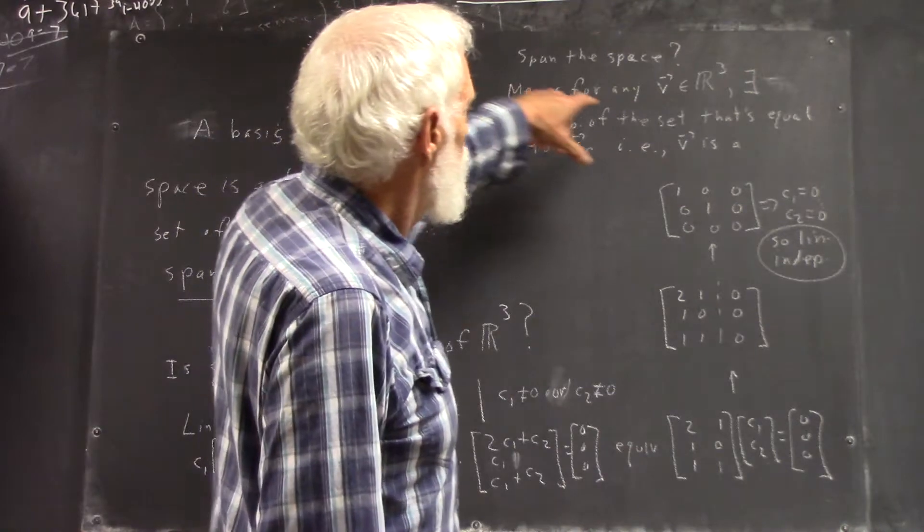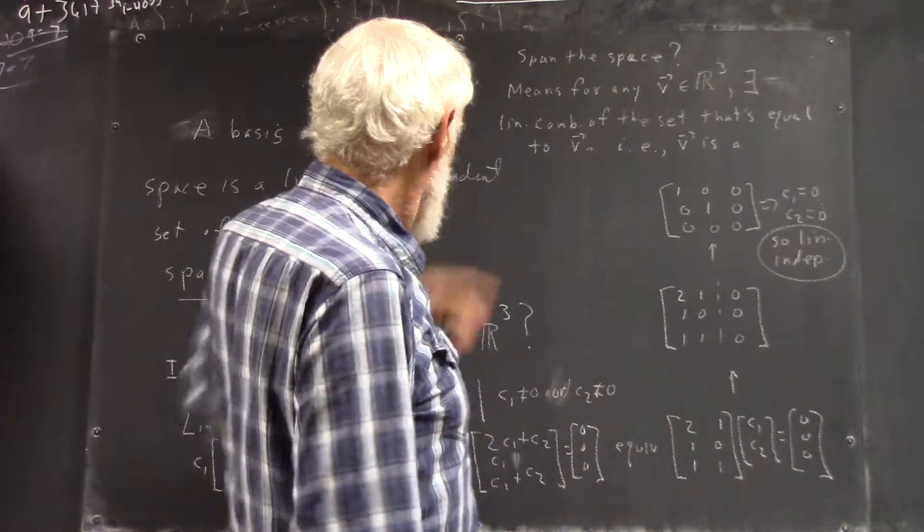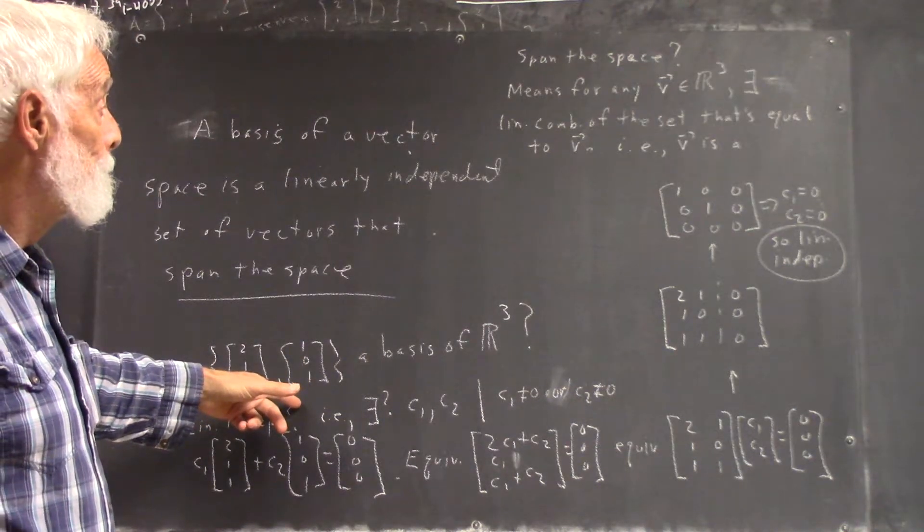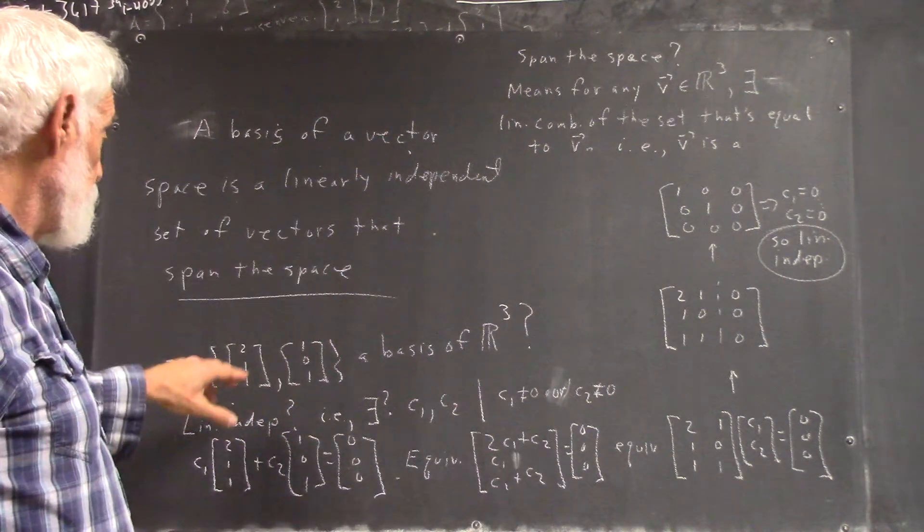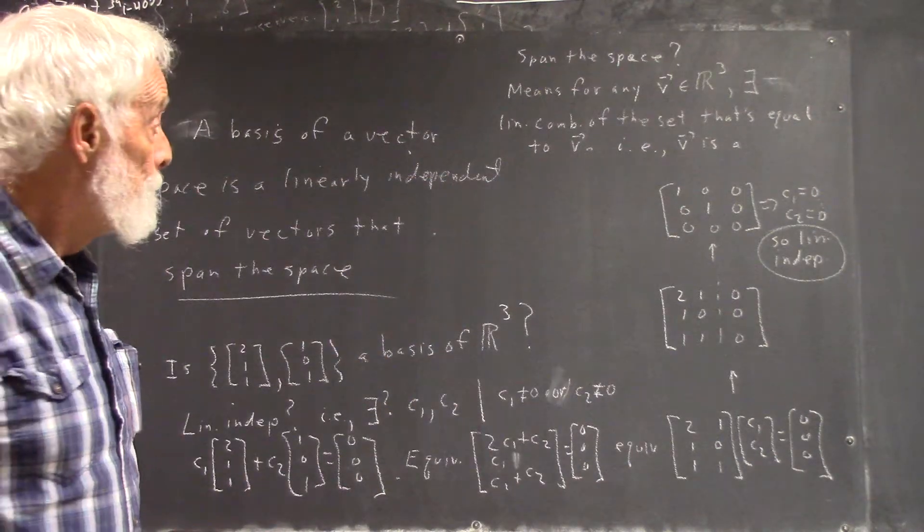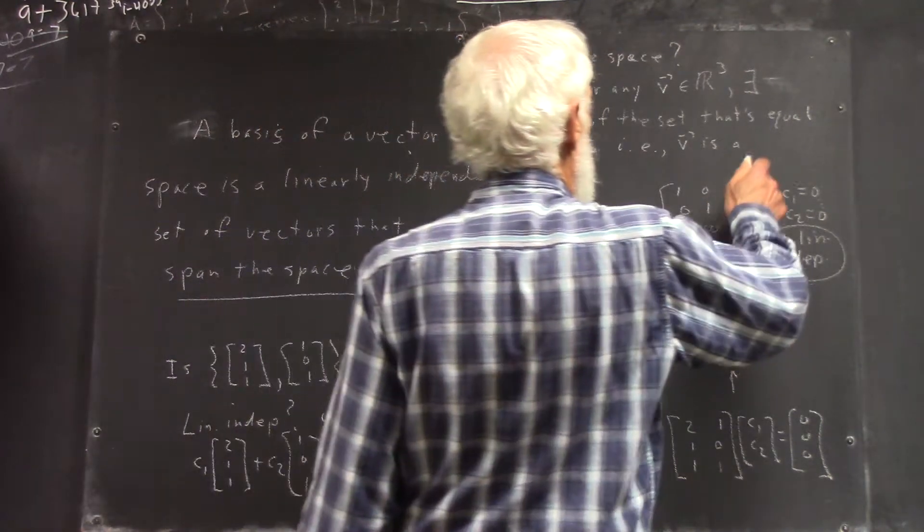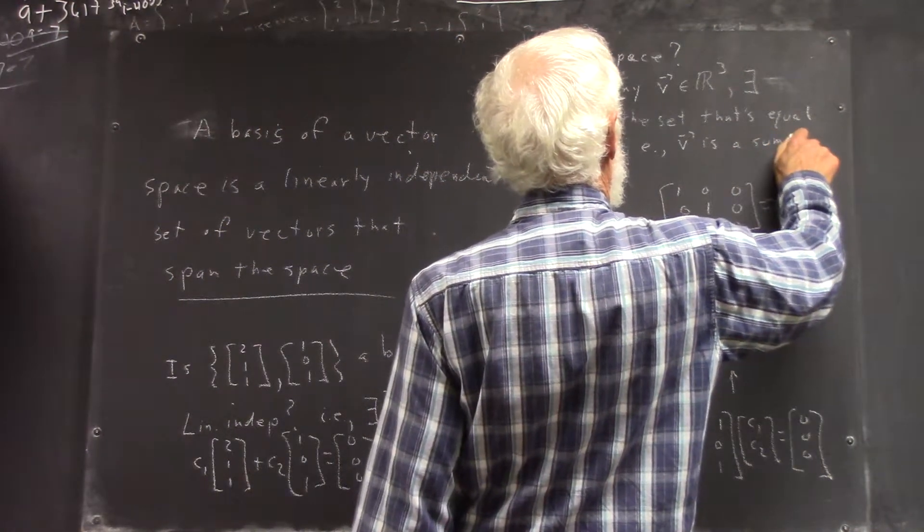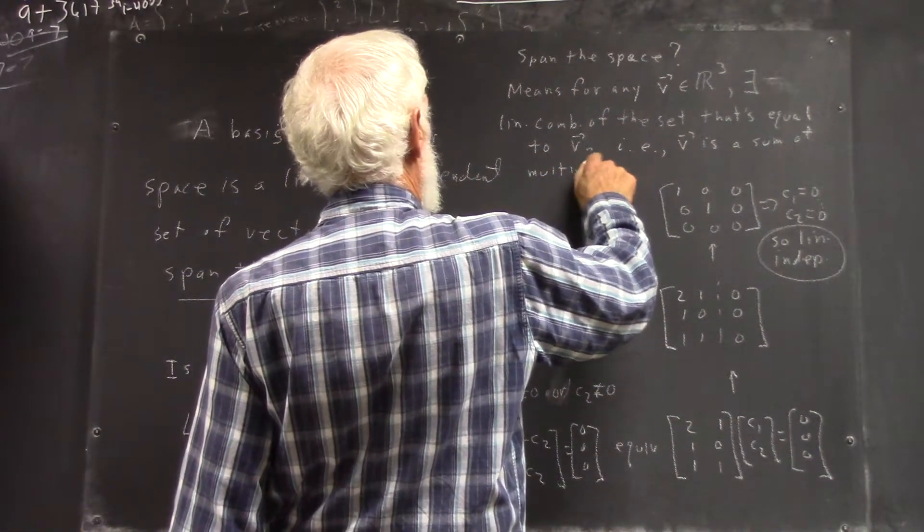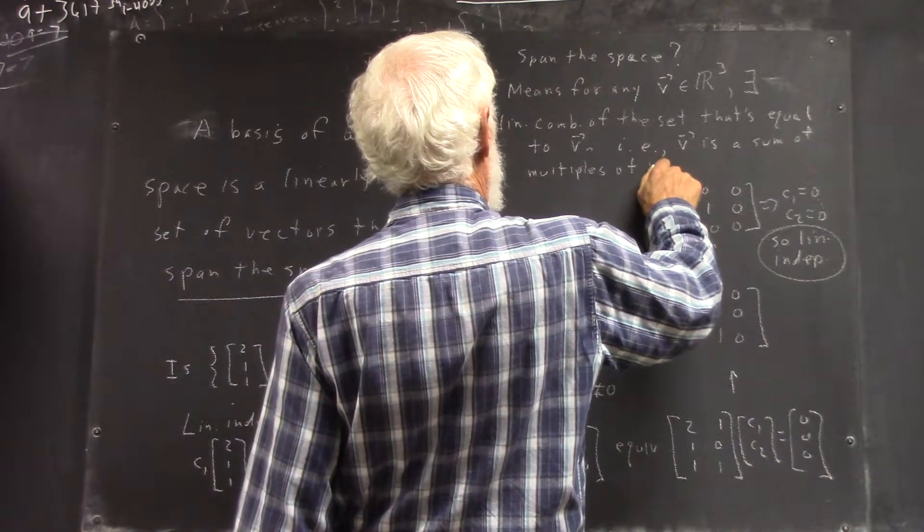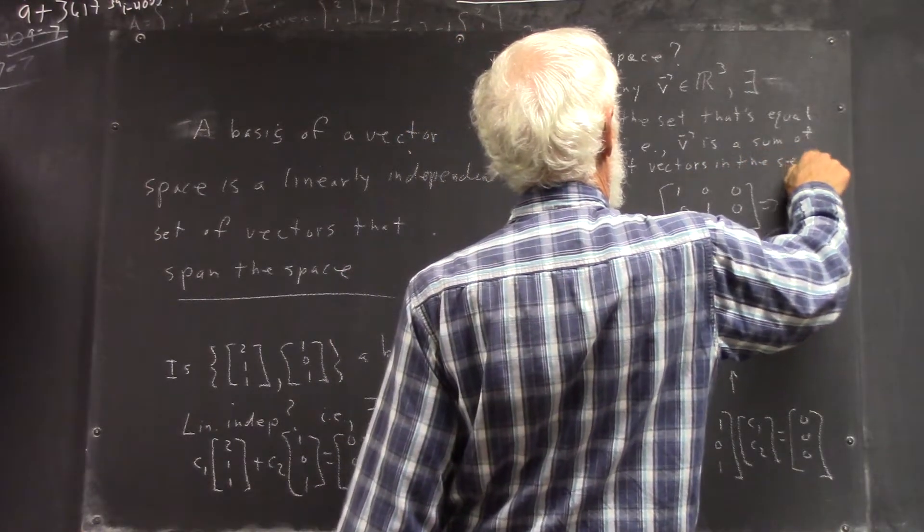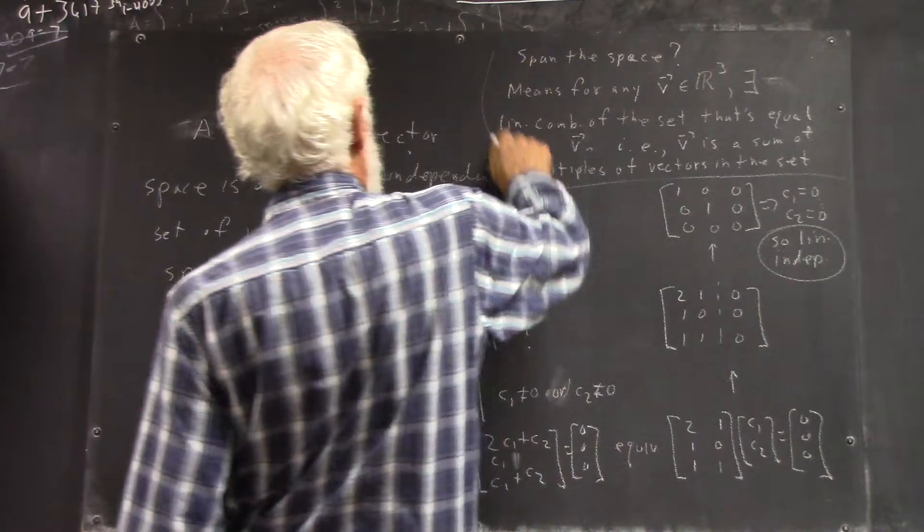It means that for any v in R3, you can get v by adding multiples of these two. There's a linear combination of these two, which is a multiple of this one plus a multiple of this one. It's equal to that vector. So that means, of course, that v is a sum of multiples of vectors in the set.